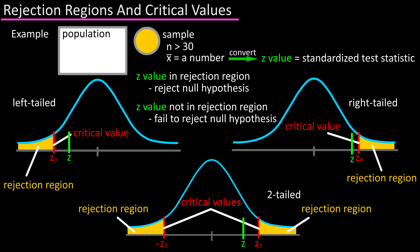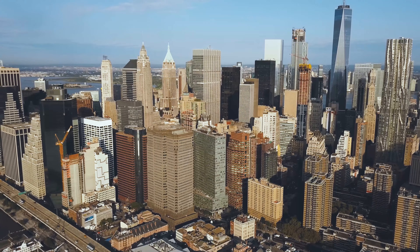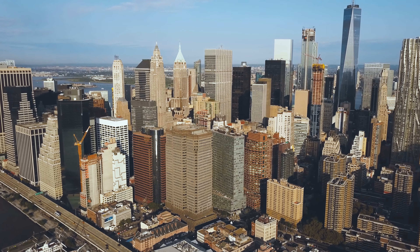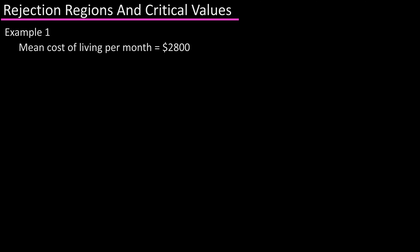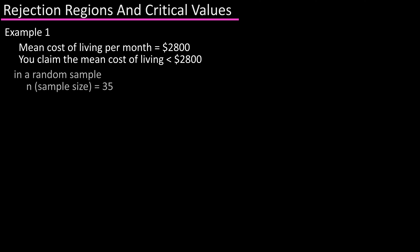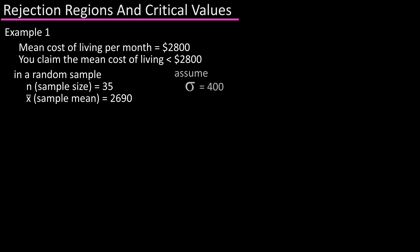Let's go through an example. You have a job offer in a city across the country and you're concerned about the cost of living. You read a report that the mean cost of living per month is $2,800, but you believe this is incorrect and claim the mean is less than $2,800. In a random sample of 35, the mean is $2,690 per month. Assume a standard deviation of 400 and a level of significance alpha equals 0.05. Test your claim.